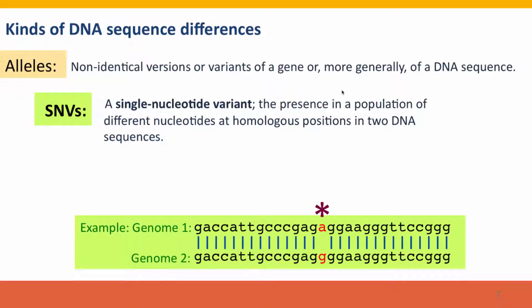Now let's think about kinds of DNA sequence differences. We already introduced the concept of alleles — different versions or variants of a gene. But now we're going to think about alleles in the context of DNA sequences. A term that we commonly use is a single nucleotide variant, often abbreviated as an SNV. That just means the presence in a population of different nucleotides at homologous positions in two DNA sequences.